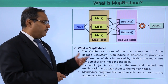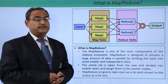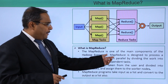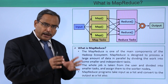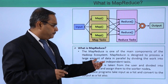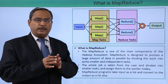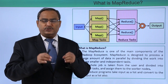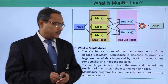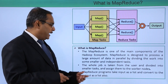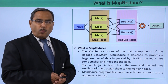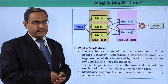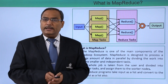MapReduce is one of the main components of the Hadoop ecosystem. In our Hadoop ecosystem video, we discussed there are many components under the Hadoop ecosystem, and MapReduce is one of them. MapReduce is designed to process a large amount of data in parallel by dividing the work into smaller, independent tasks. Large amounts of data will not be processed at once — they will be divided into smaller pieces, assigned to working nodes, and executed in parallel for faster processing. The whole job is taken from the user, divided into smaller tasks, and assigned to the working nodes. MapReduce programs take inputs as a list and convert the output also as a list.